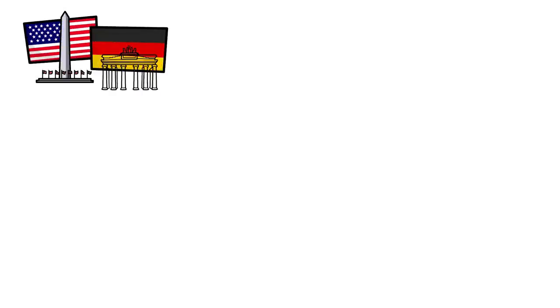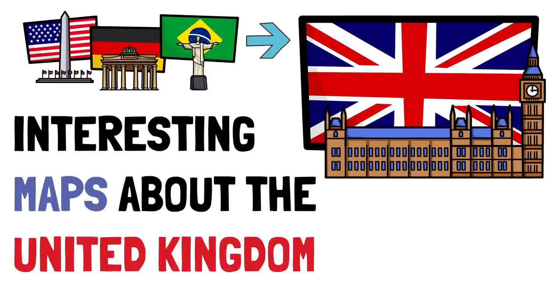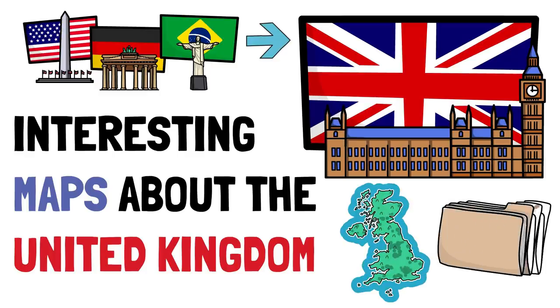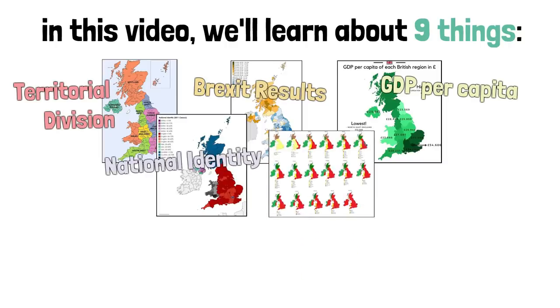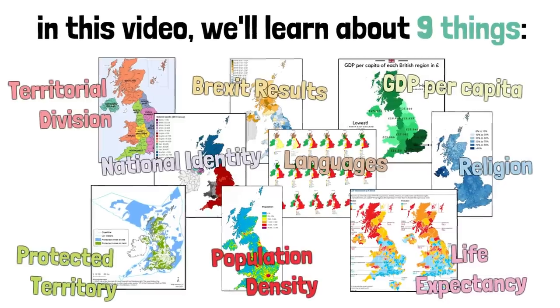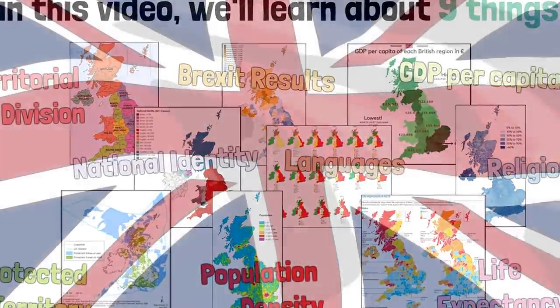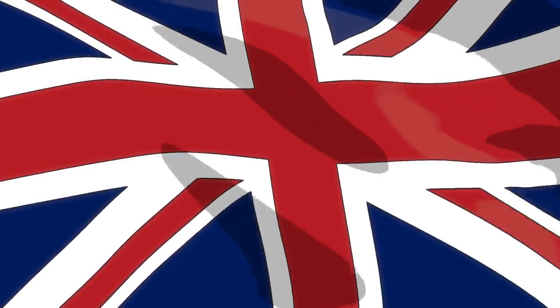After doing this for the US, Germany, Brazil, and a couple more, in this video we're going to take a look at a few maps that teach us about the United Kingdom. Maps are a good way to display information about whichever region they are displaying, both as interesting information about the whole nation or as a way to compare different territories within it. We'll learn about nine things: territorial division, Brexit results and current polls, GDP per capita, national identity, languages throughout time, religion, protected territory, population density, and life expectancy.